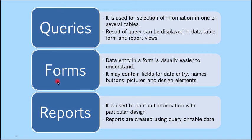Forms are used for data entry — they are visually easier to understand. Anyone can see what they have to do and fill up the entries. Forms may contain fields for data entry, names, buttons, pictures, and other design elements, making them very simple for the user. Reports are usually used to print out information with a particular design. There are many different types of layouts available for forms and reports, and a user can choose any layout according to their requirement.